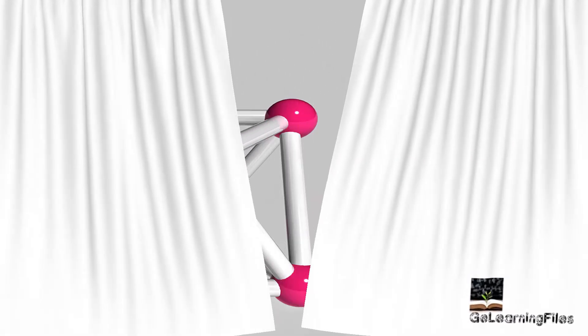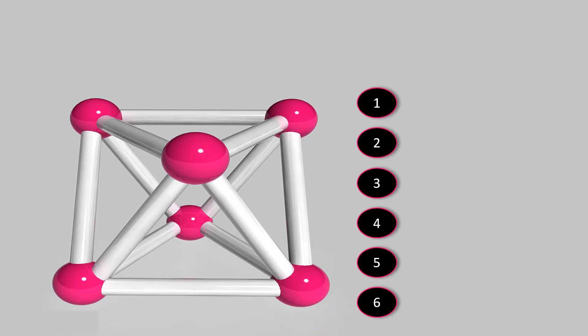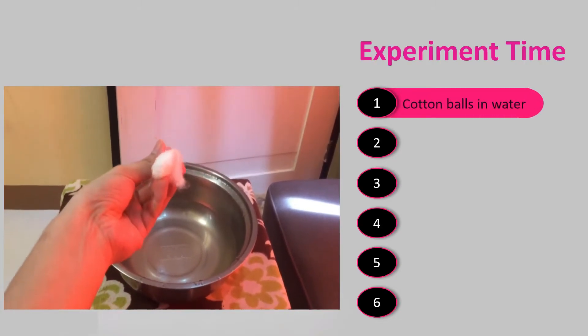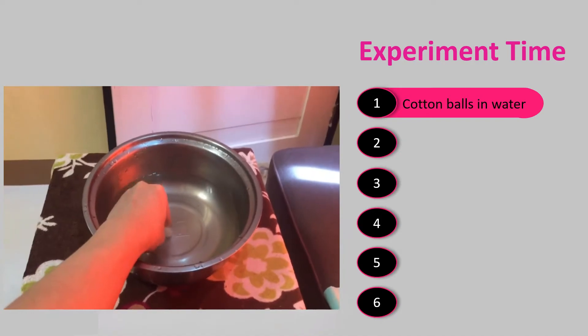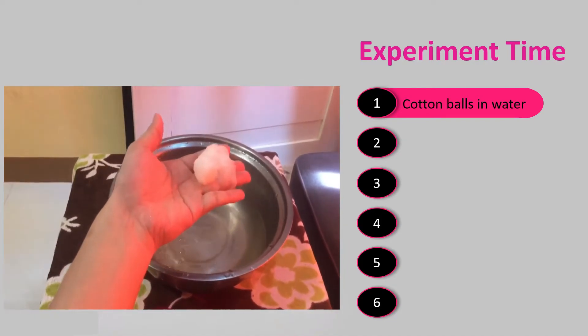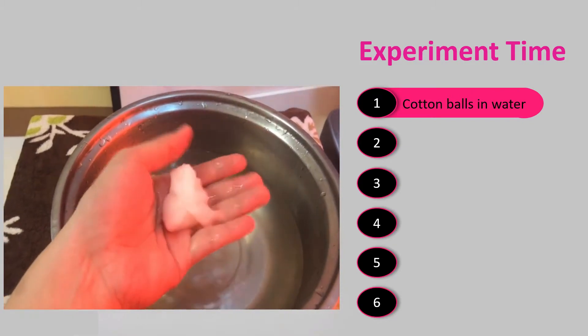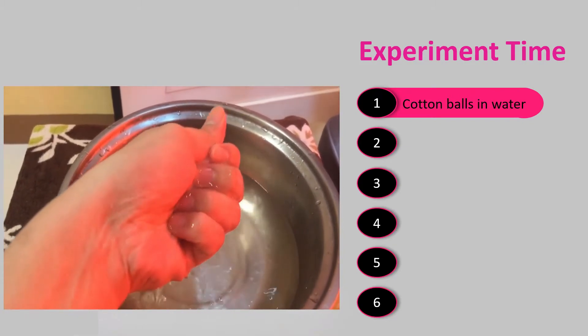Now, it's our experiment time. The first material we observe is the cotton balls in water. Observe the characteristic of each material before we place it in the basin with water. Now, let's observe the cotton balls in a basin with water. It absorbs water.